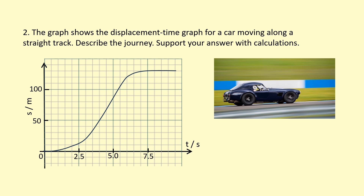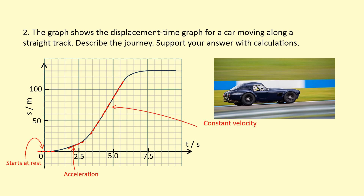Let's start at a displacement of 0 at time t equals 0. You can see the gradient is 0, so initially the car is not moving — it's at rest. But then you can see the steepness of the gradient is increasing, which means the car is accelerating. Remember, steepness represents velocity, so if it's getting steeper that means the velocity is increasing. After about 3.5 seconds it reaches a steady steepness, meaning there's a constant velocity during that part.